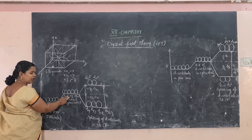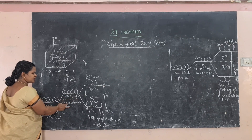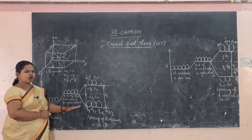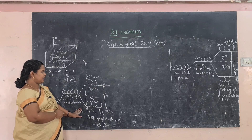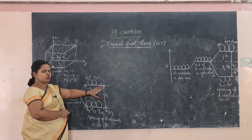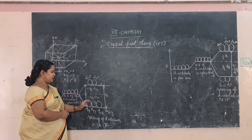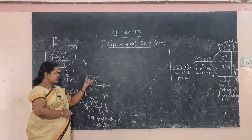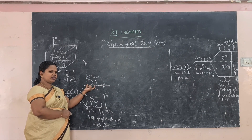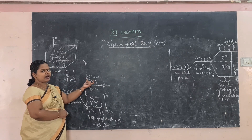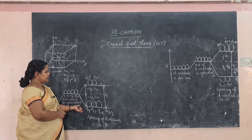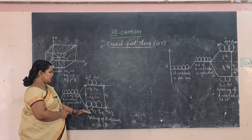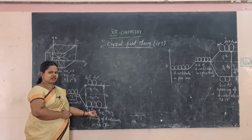The average energy of the d-orbitals in the spherical crystal field then splits into two degenerate levels: t2g and eg. The eg level is of higher energy. The eg orbitals are dx²-y² and dz². The t2g orbitals — dxy, dyz, and dxz — are of lower energy.